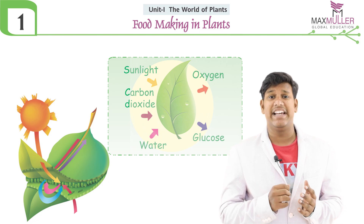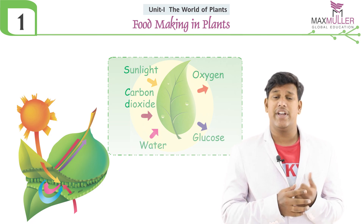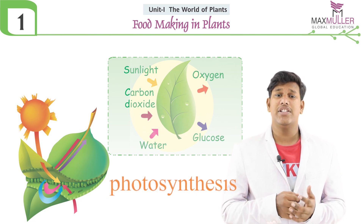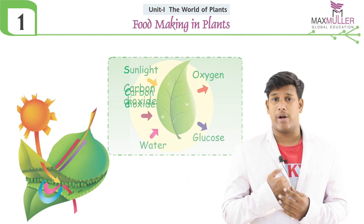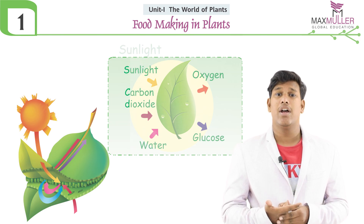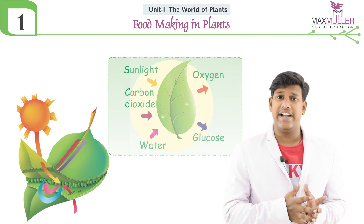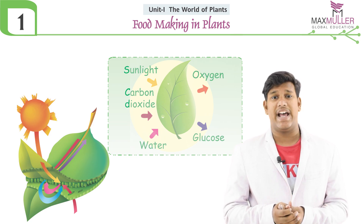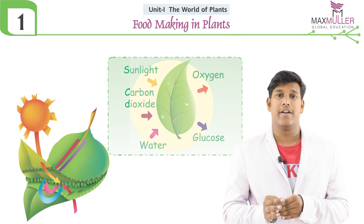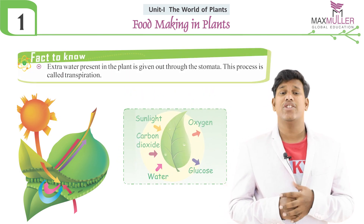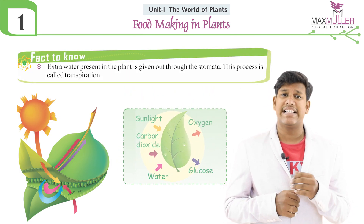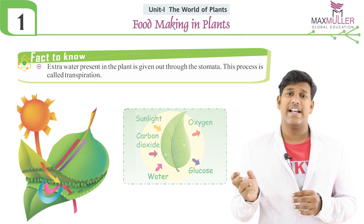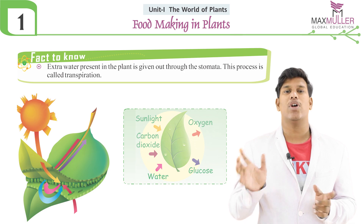The leaf is called the food factory of a plant. The process by which these green leaves prepare their food is known as photosynthesis. For photosynthesis, the leaf requires carbon dioxide, sunlight, and water. Plants get these resources from soil, sun, and air.